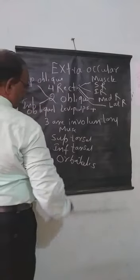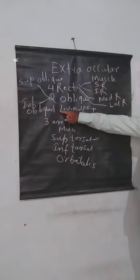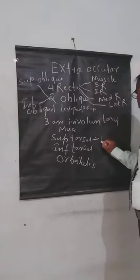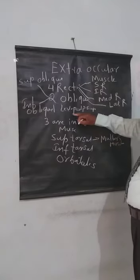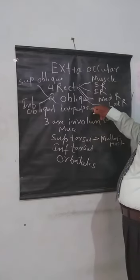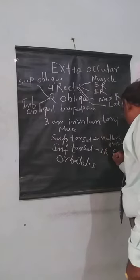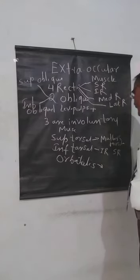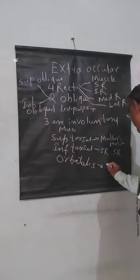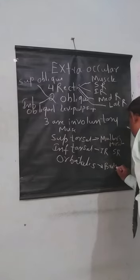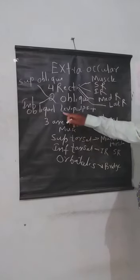Superior tarsal is regarded as part and parcel of the levator palpebrae superioris. It is also called Muller's muscle. Inferior tarsal is present between the inferior and superior rectus. Orbitalis muscle forms a bridge between the orbital fissure. The function of orbitalis is yet to be known.